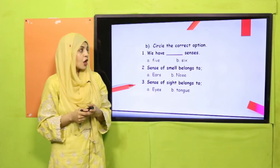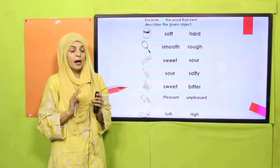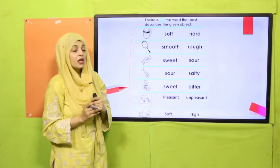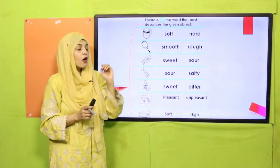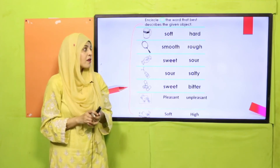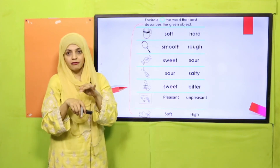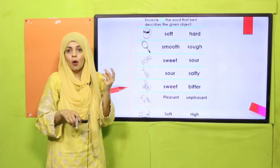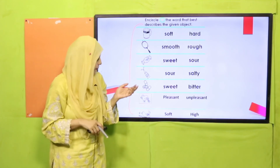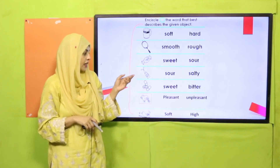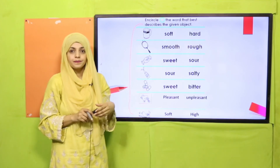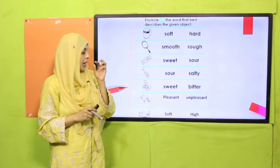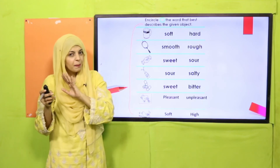The last question is a fun part! Some pictures are given and you have to encircle the word that best describes the given object. A cup — is it soft or hard? A mirror — is it smooth or rough? A candy — is it sweet or sour? A salt bottle — is it sour or salty? Medicines — are they sweet or bitter? A flower — does it have a pleasant smell or an unpleasant smell?